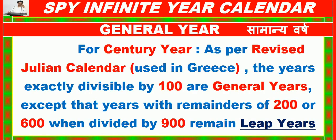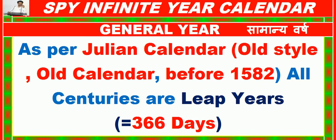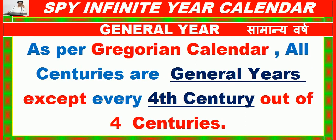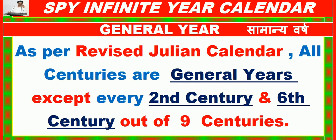For century years as per the Revised Julian Calendar used in Greece, years exactly divisible by 100 are General Years, except that years with remainders of 200 or 600 when divided by 900 remain Leap Years. As per the Julian Calendar (Old Style, before 1582), all centuries are Leap Years of 366 days. As per the Gregorian Calendar, all centuries are General Years except every 4th century. As per the Revised Julian Calendar, all centuries are General Years except every 2nd and 6th century out of 9.